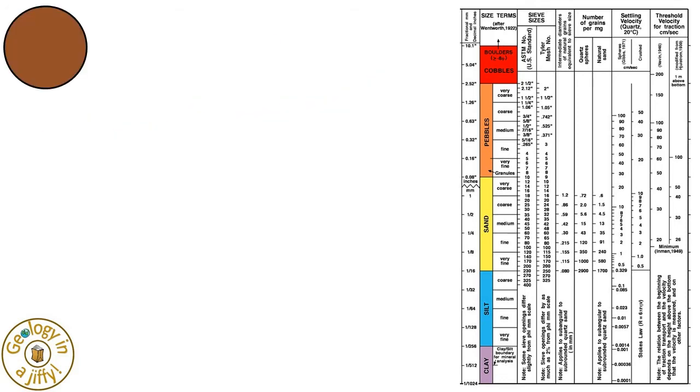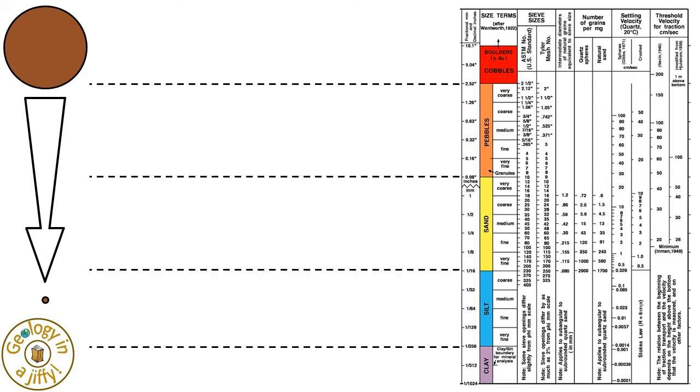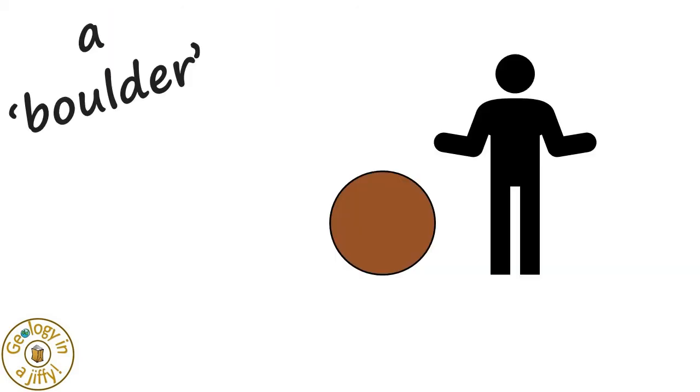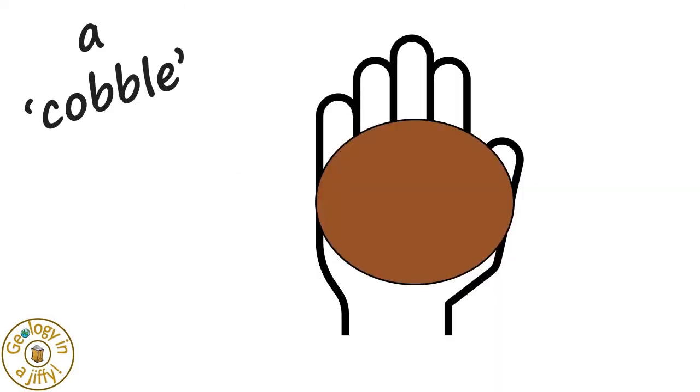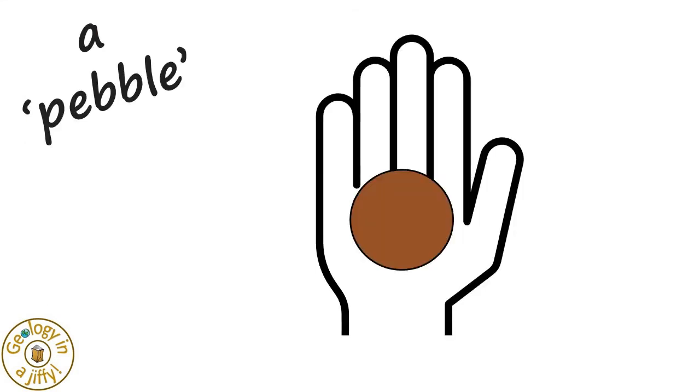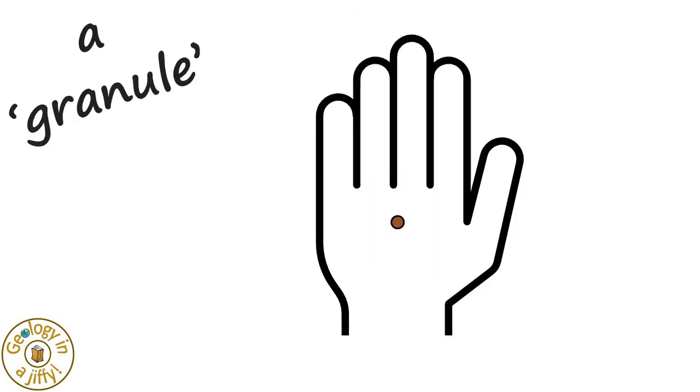It has larger grain diameters ranging down to the smallest grain diameters, starting with boulders as the largest, shown to scale, then cobbles about the size of a large hand, then pebbles about the size of the palm of your hand, then granules.